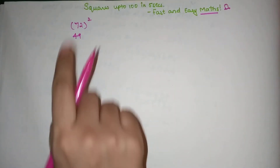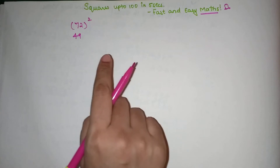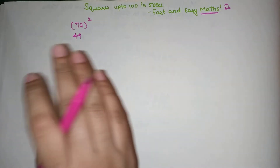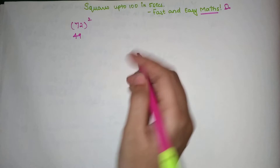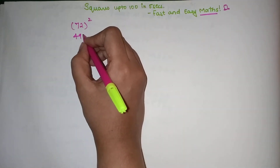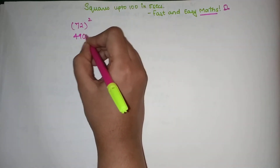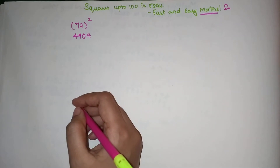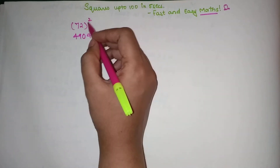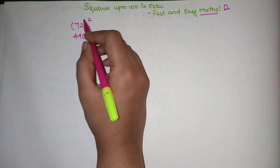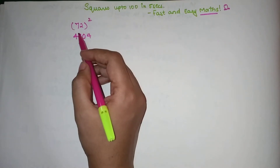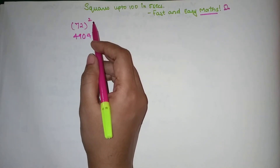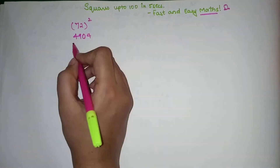For this trick, you have to remember one thing: the last digit's square, even if it is just a single number — in the case of 2 and 3 — you will still write it in two-digit form. So you will write it as 04. Then you do the multiplication of all the digits in your question: 7 × 2 = 14, and 14 × 2 = 28.